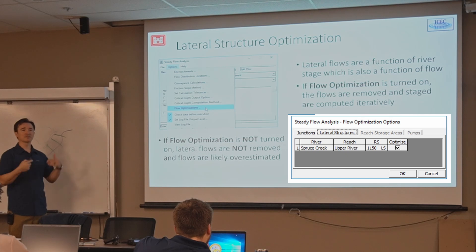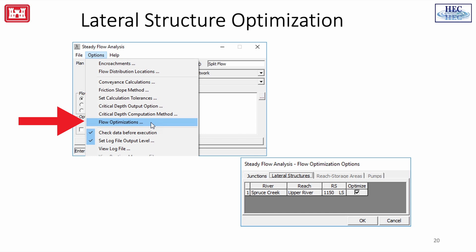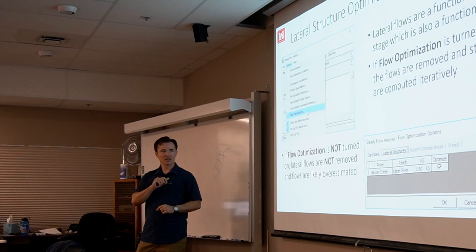Because the flow at the structure is a function of the stage and the stage you're taking flow out. So if you take more flow out, it's going to reduce the stage and you're going to get less flow at the structure. So it's got to iterate. If you have many of these structures, they can have a hard time converging. The way you turn that on is by going to the steady flow analysis window, flow optimizations. And then for each structure, there's a little checkbox and you turn that on. So it's going to try to iterate at that structure and try to converge to a solution.